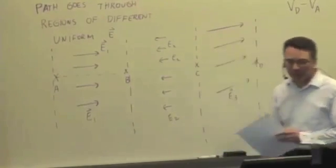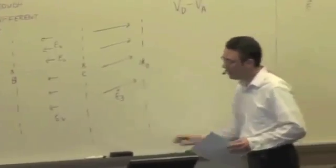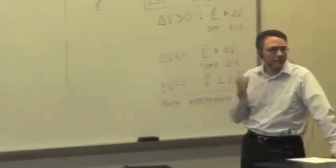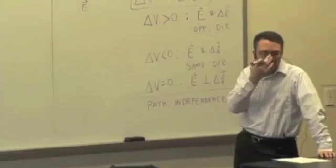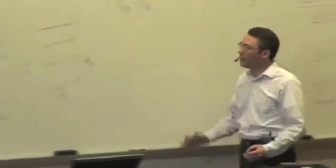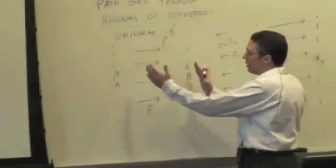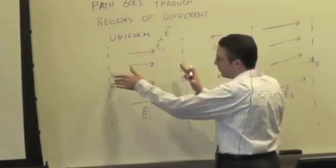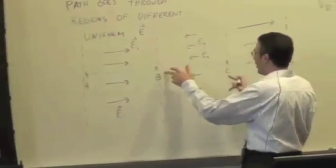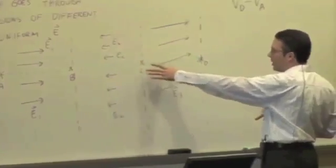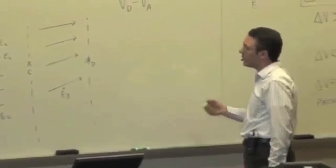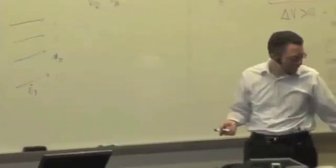So what do I do? How do I calculate the total potential difference across that path? Break it up into pieces, right? Break it up into regions where I know how to calculate the potential difference for a uniform field. So A to B, the field is uniform, it's E1. And then from B to C, it's a different field, but it's uniform, E2. And then C to D is E3. So I could calculate the potential difference from A to B and then B to C and then C to D.